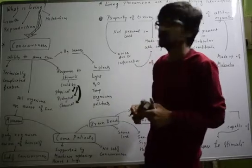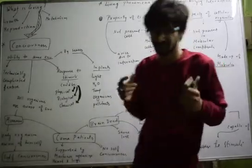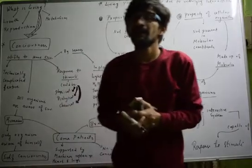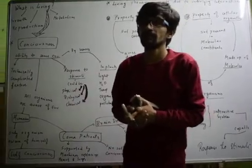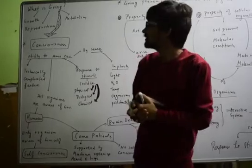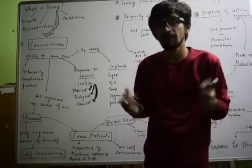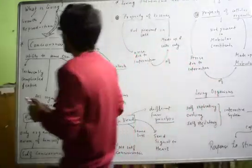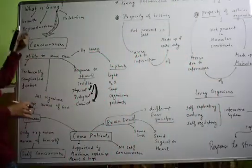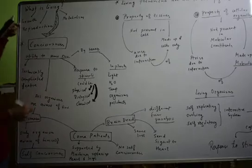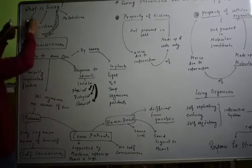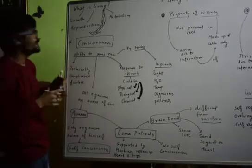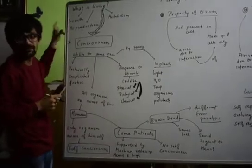Hello everyone, welcome to my third video for Class 11th NCERT. We had started with the Living World chapter. In the previous classes we have seen what is living. In the living process we have seen that we have various characters which we need to discuss — growth, reproduction, metabolism. These three characters have been discussed in the previous classes.